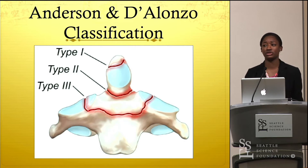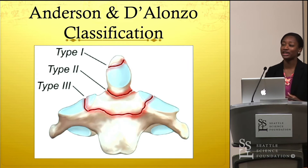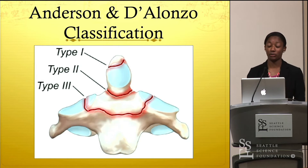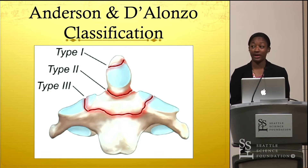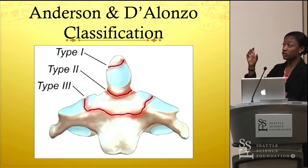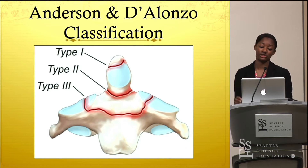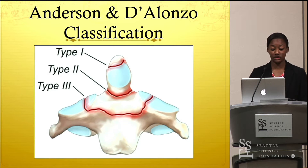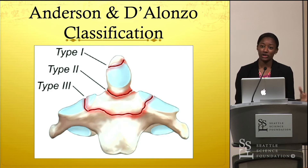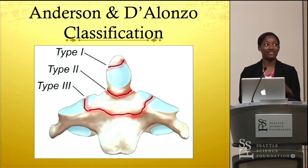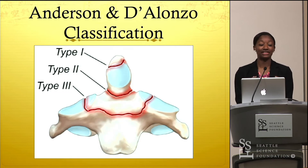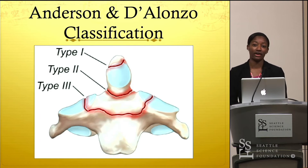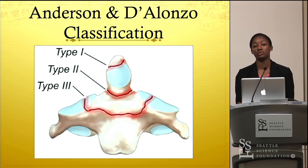Type 2 was considered to be a fracture at the neck of the odontoid process, or at the junction between the odontoid process and the body of C2, and that is considered to be unstable. Recall that the neck of the odontoid is the lesser vascularized area, so most likely this is the reason why it's more prone to fractures.